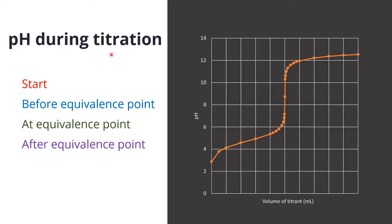During titration we will look at four stages. At the start, this is going to be the pH of the weak acid, acetic acid. We need the acid ionization constant to calculate the concentration of hydronium ion. The second stage is before equivalence point. The pH will increase, and since the salt produced will have some hydrolysis, we have the property of a buffer here.